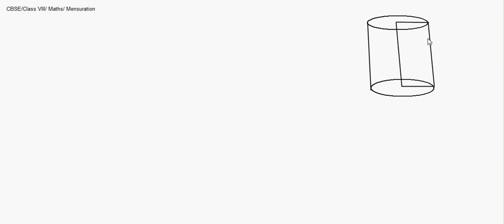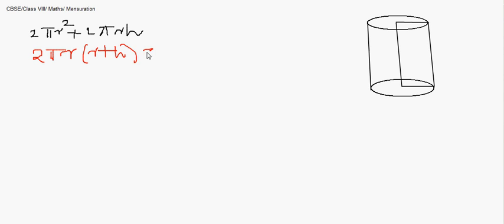A right circular cylinder has two circles at each end. The curved surface area of the lateral part becomes 2πrh. The total surface area includes the two circular regions — that is 2πr² — plus the curved surface area 2πrh. This can also be expressed as 2πr(r + h). This is the total surface area of a cylinder.